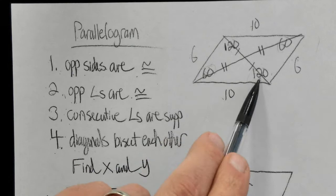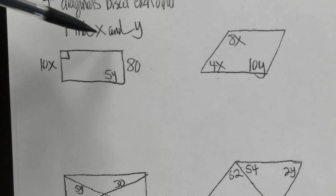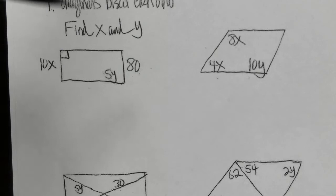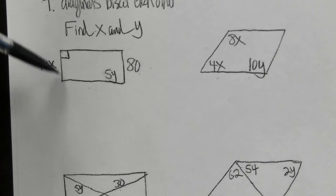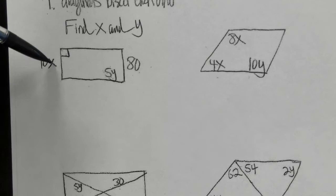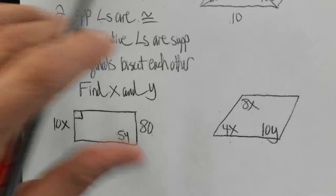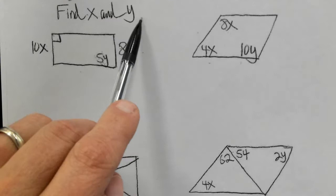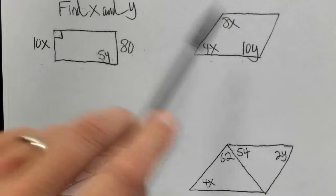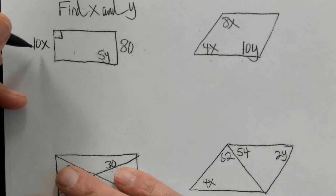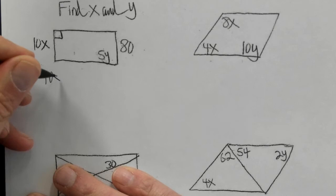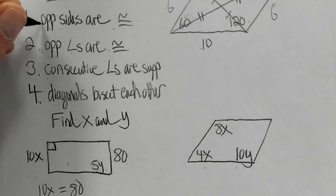The question asks us to find x and y. Based on the expressions given, we can set up equations. Let's solve for x first. The left side of this parallelogram is 10x and the opposite side is 80. Since opposite sides in a parallelogram are congruent, the equation is 10x equals 80. Dividing both sides by 10, x is equal to 8.